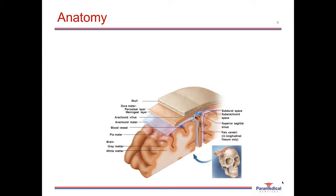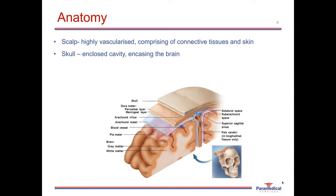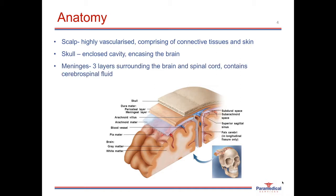Looking at the anatomy, on the outermost layer of the head we have the scalp, which is highly vascularized and comprises connective tissues, soft tissues, skin and hair. Beneath the scalp is the skull, which encloses the brain within its cavity, with skull and facial bones fused together. Beneath the bone layer are the meninges — three layers of connective tissue surrounding the brain and spinal cord, containing cerebral spinal fluid that protects against minor injuries. Underneath that is the actual brain tissue.